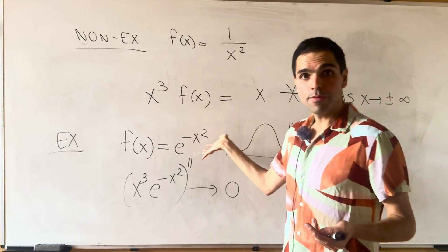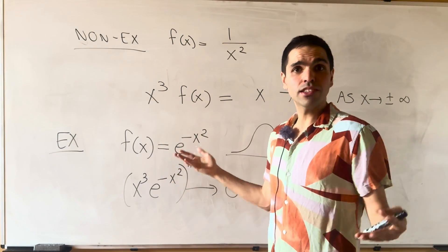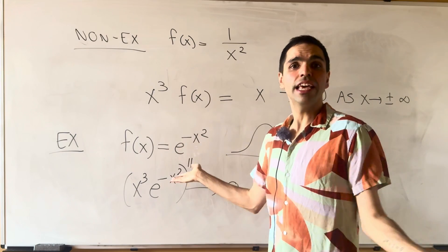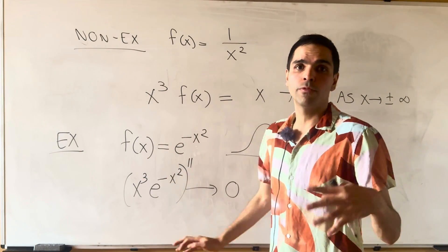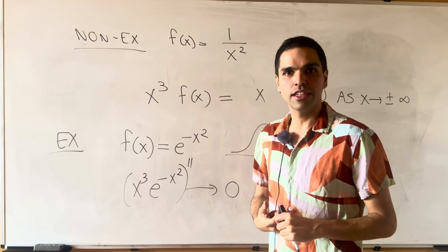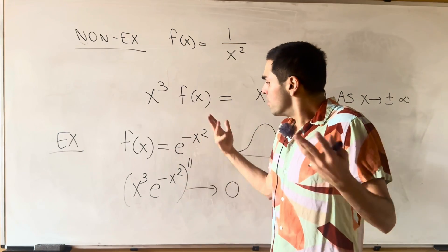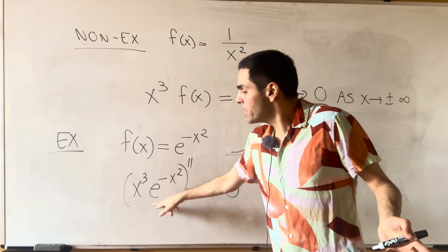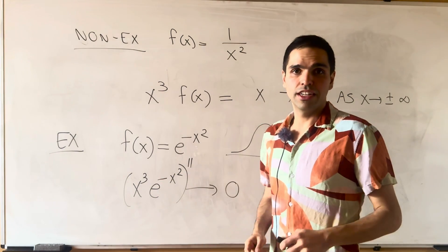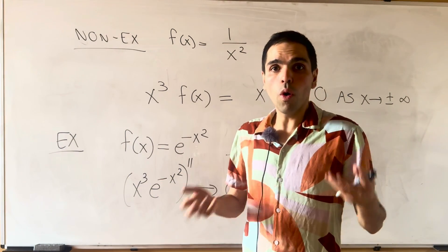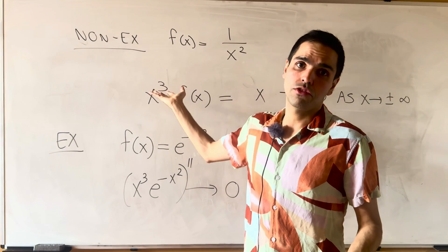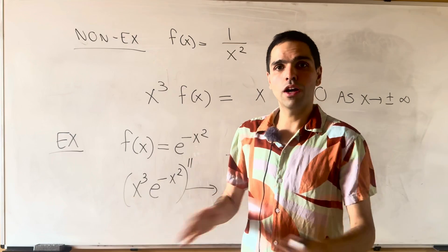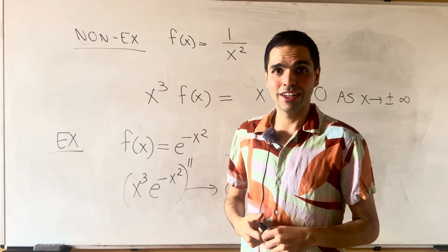And what does that mean concretely? It really means concretely that if you're taking the Fourier transform, you can really assume that any terms at plus or minus infinity are zero. And this is precisely because of this definition. In other words, we will only take Fourier transforms of functions which are Schwarz. Otherwise, our calculations won't really work.